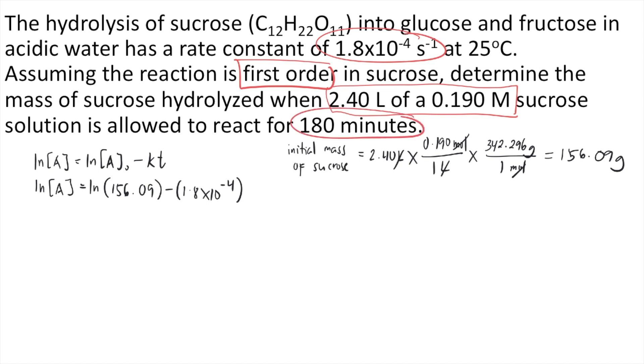Now be careful. If you look at your rate constant, it's in second raised to negative 1. So we need the units to be consistent. In order to do that, you need to convert 180 minutes into seconds. 180 minutes, we know that 1 minute consists of 60 seconds. So 180 times 60, that's equal to 10,800 seconds. So that will be the time that you will plug into the equation, 10,800.